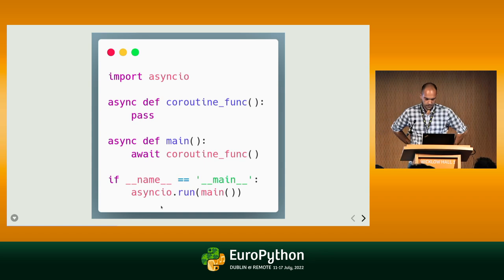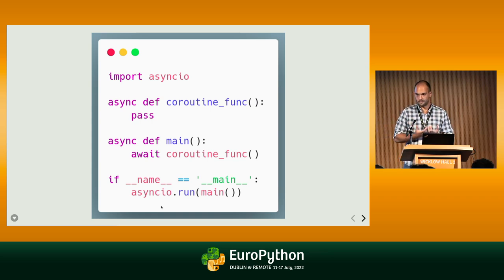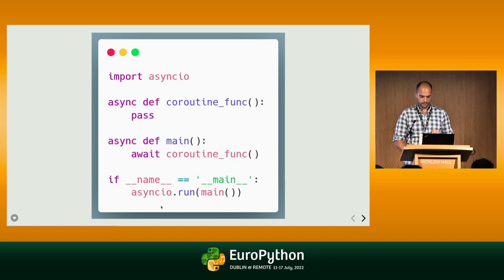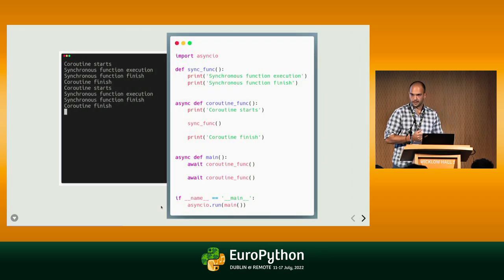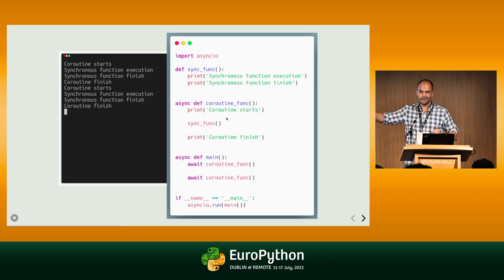How do you use that? First, you need to start your main function in an asyncio event loop. Each coroutine is a standard Python function defined with the async keyword. If you want to call an async function, you need to await it. Here's a more complex example: the main function awaits a coroutine function twice, which calls a synchronous function — you can actually call synchronous code in an asynchronous context.